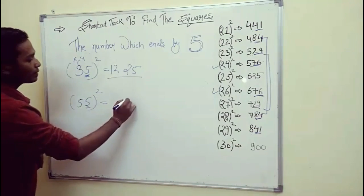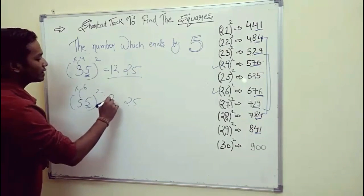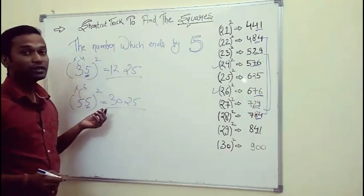Similarly for 55 squared, you have 25 and 5 multiplied by its consecutive number 6 gives 30, so the answer is 3025.